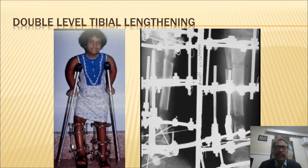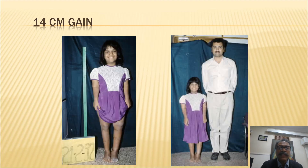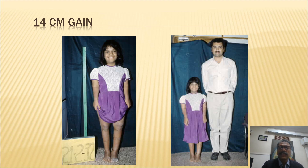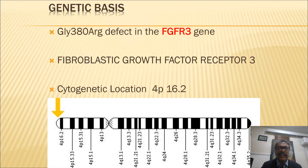By performing bilateral double-level tibia lengthening we managed to give her 14 centimeters of length gain, as you can see from the picture. She finished her treatment in February 1992, and she is shown here with the young surgeon who managed this — she was definitely one of the first dwarfs in this part of Asia to undergo lengthening.